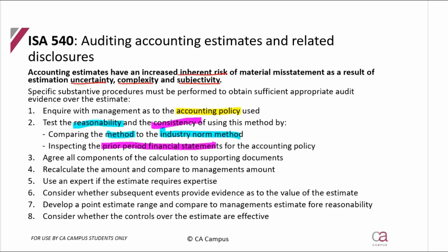If there was a change in accounting policy, auditors need to inspect that the change was authorized. We would look at the minutes of directors' meetings, since they would have to approve any change in accounting policy. Once we are comfortable with the policy and its application, we then need to go and test the calculation.